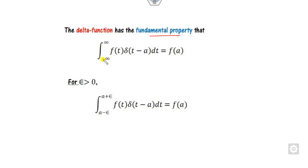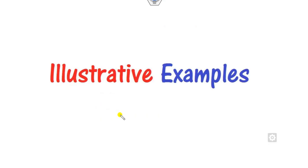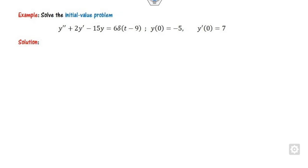Some fundamental properties: if you integrate delta(t minus a) times f(t) over the real line, the result is simply f(a). In general, integrating from a minus epsilon to a plus epsilon gives the same result. We will now discuss two examples so that you can understand this easily.